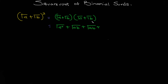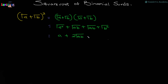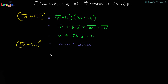Plus √b times √b, which is √b squared. Now, the square root of a squared is a, plus √(ab) plus √(ab) gives 2√(ab), plus the square root of b squared is b. So your answer is a + b + 2√(ab).